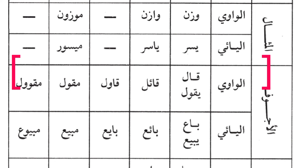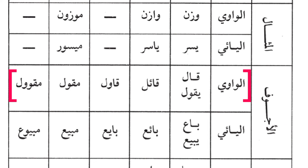The next type of verb is al-ajwaf. Al-ajwaf is a type of verb which has its second letter as a sick letter — either waw or ya. An example for the waw type is 'qala', he said. The sayer, the speaker, will be 'qa'ilun' — the origin is 'qawilun'. And 'maqulun' means what is being said, with the original form being 'maqwulun'. The ya type is the word 'ba'a', he sold.